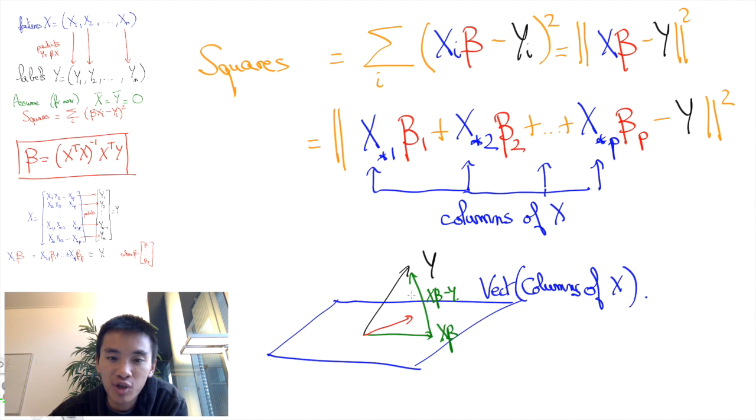So once again, Euclidean geometry provides us the answer. We need to set X*beta to be the value of the projection of the vector Y onto the vector subspace spanned by the columns of the matrix X.